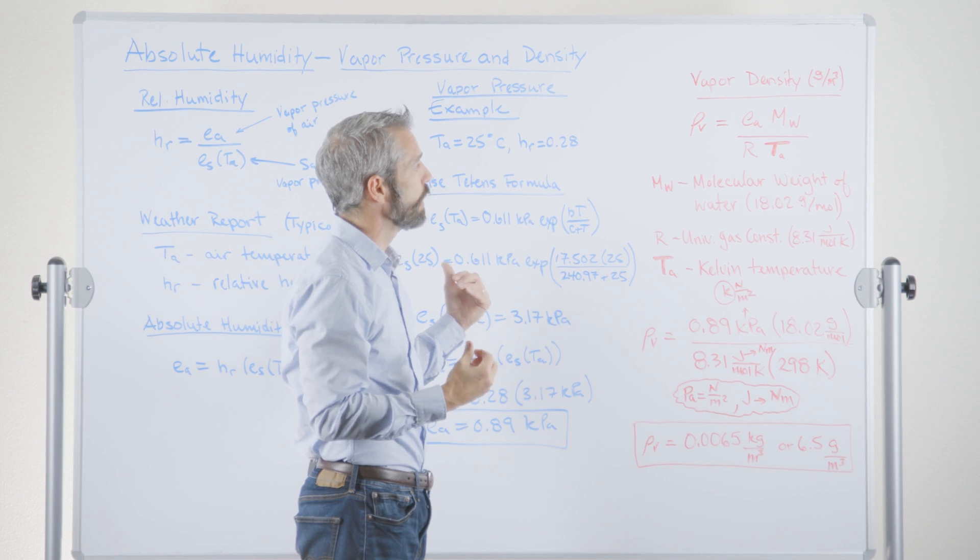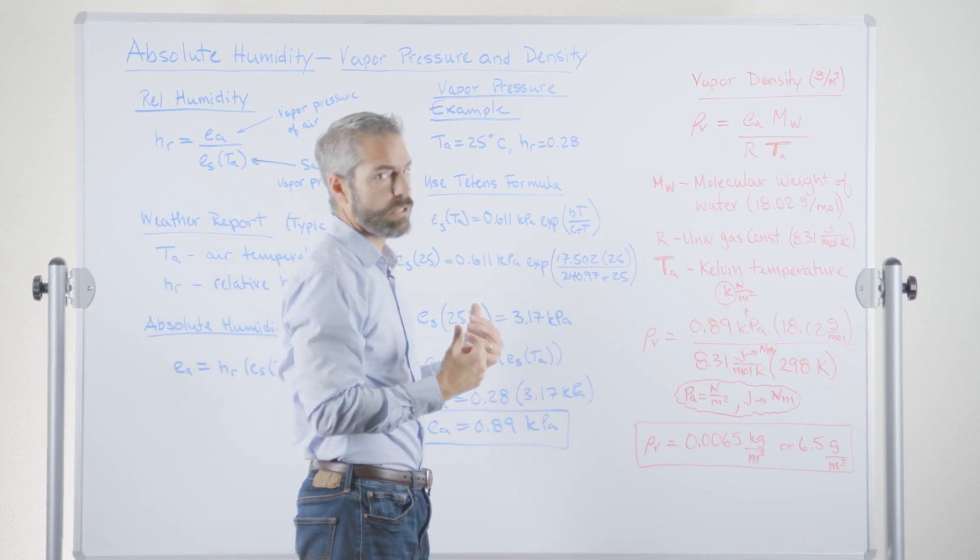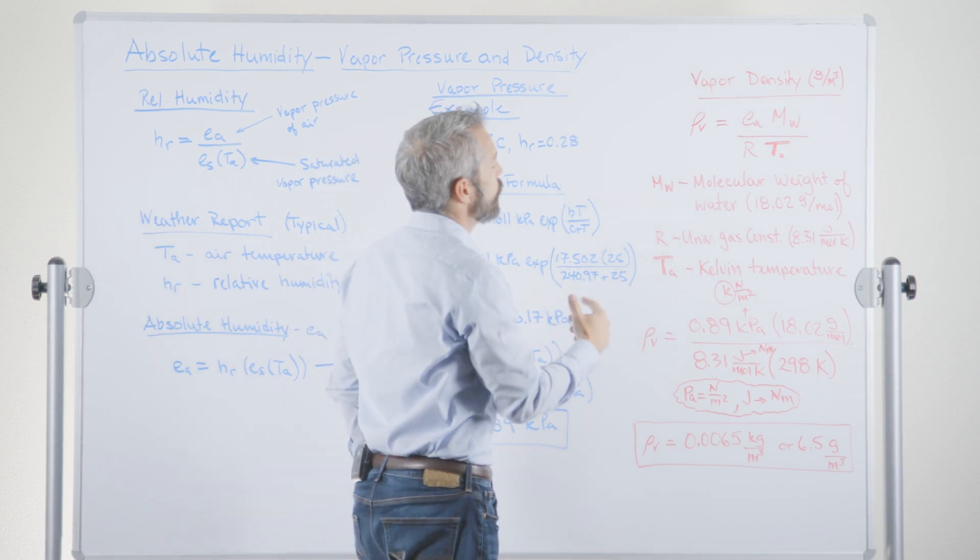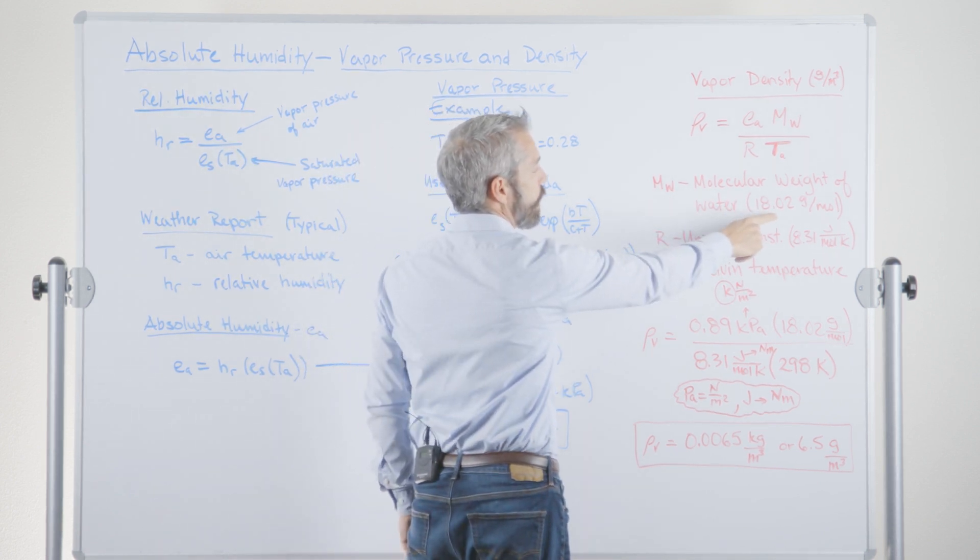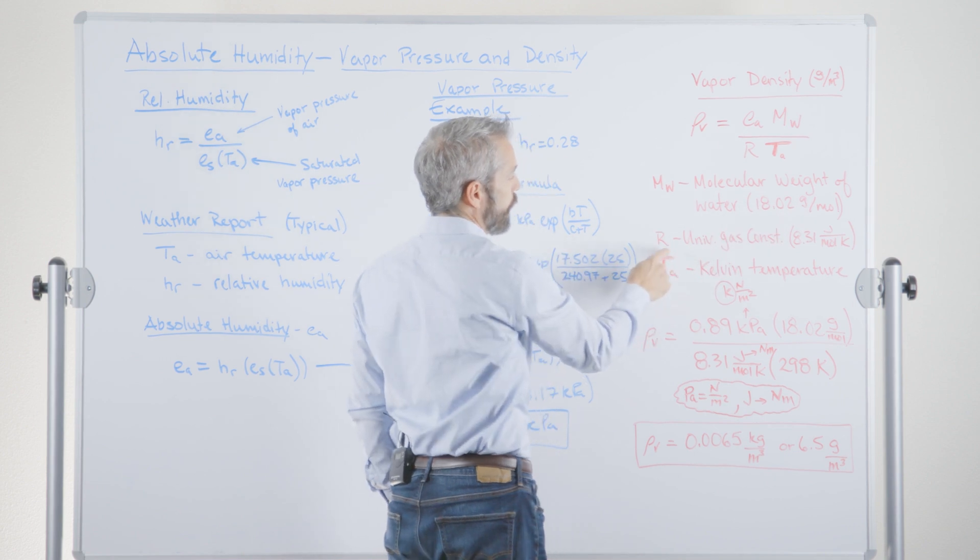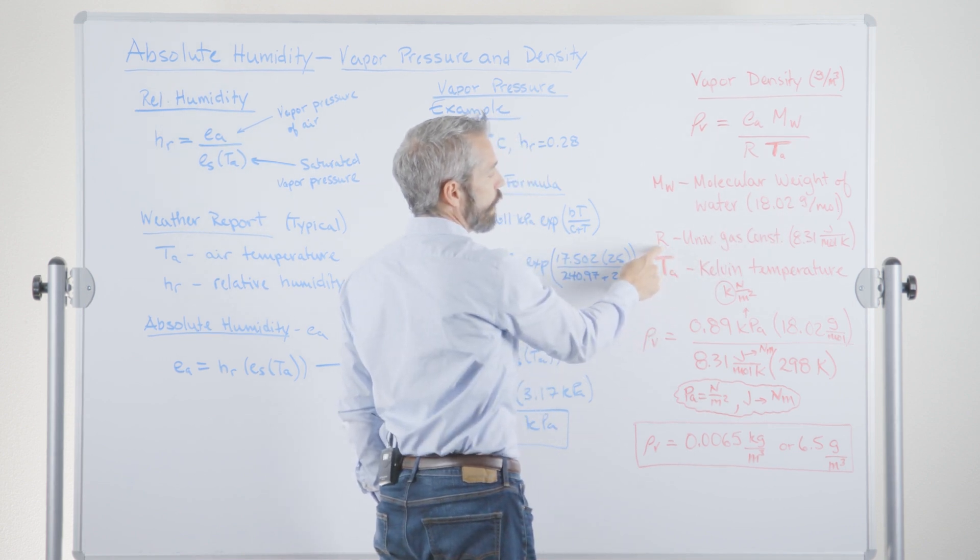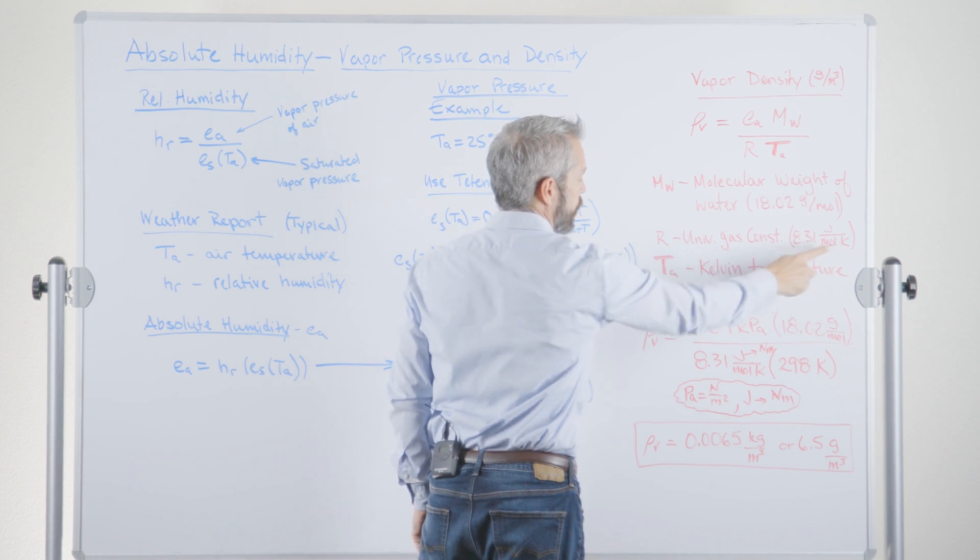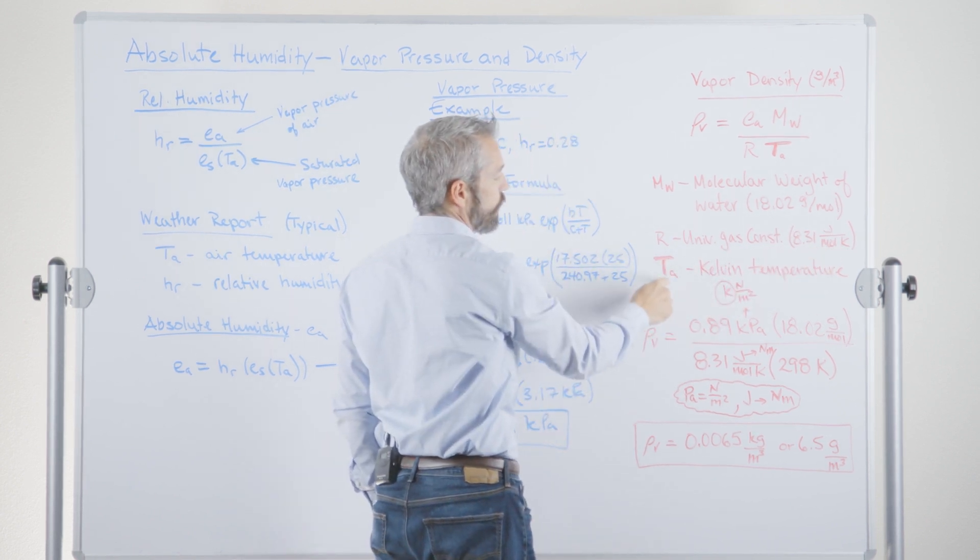So I'll take you through an example here. Just continue on the one we've already done, just so you can see how to calculate it and to avoid a pretty common misstep. So, again, molecular weight of water is 18.02 grams per mole. The universal gas constant, R, is 8.31 joules per mole Kelvin.